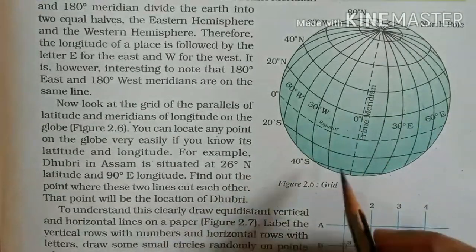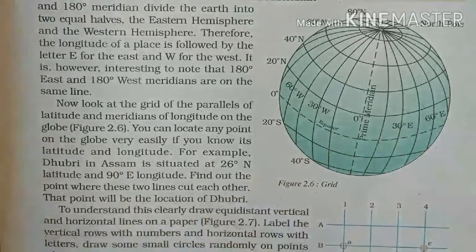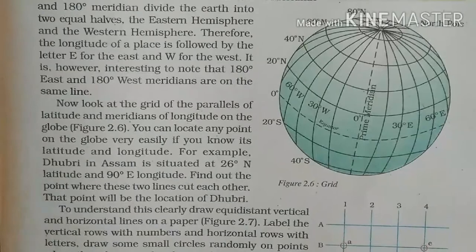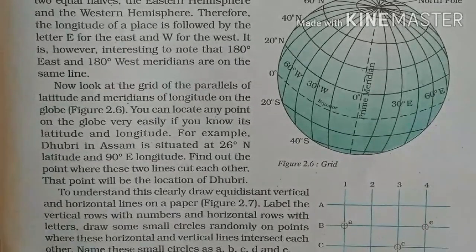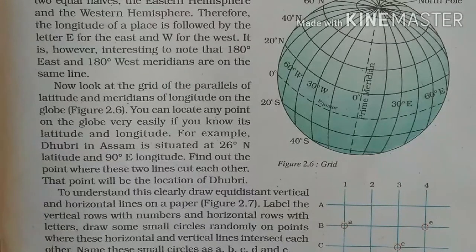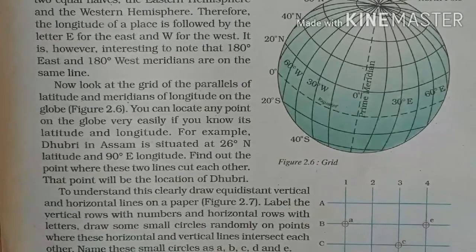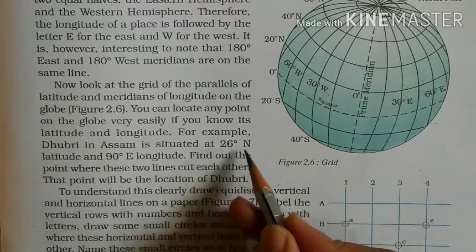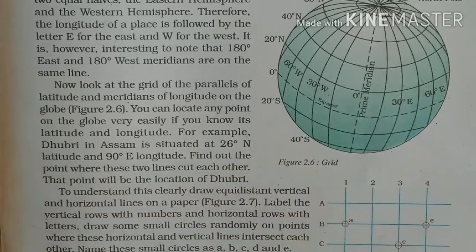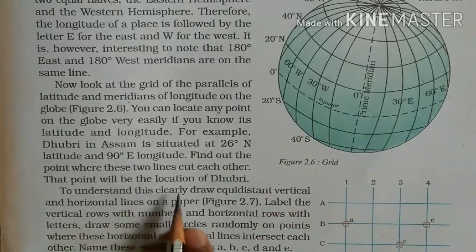You can easily locate any point. For example, Dhubri in Assam is at 26 degrees North Latitude and 90 degrees East Longitude. To find this location, look for where these two lines intersect — where 26 degrees North and 90 degrees East cut each other. That point will be the location of Dhubri.